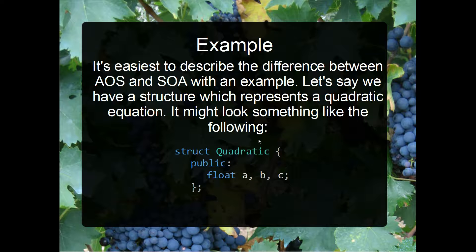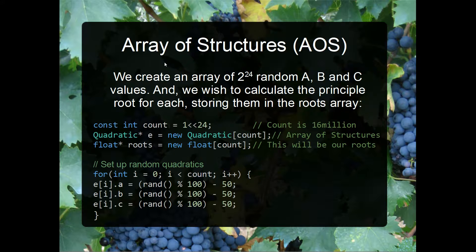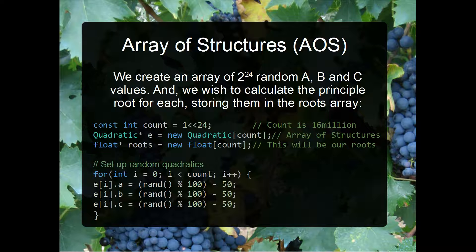We're going to be using the quadratic equation — that's negative B plus or minus the root of B squared minus 4AC over 2A. Now let's have a look at Array of Structures, AOS. We're going to create an array of 2 to the power of 24 random A, B, C values — roughly 16 million quadratics in a gigantic array — and calculate the roots for each using the quadratic equation. The actual algorithm is pretty irrelevant; I'm just using it as an example.